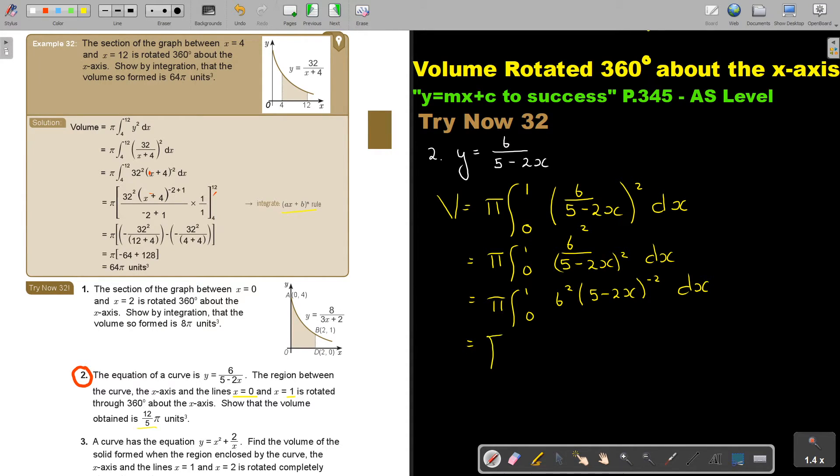And now I'm going to integrate. So it's going to be that 6 square. Let's just finish this one. 5 minus 2x. If I add 1, it's minus 1, divide negative 1. But don't forget to multiply by that. So multiply 1 over negative 2.